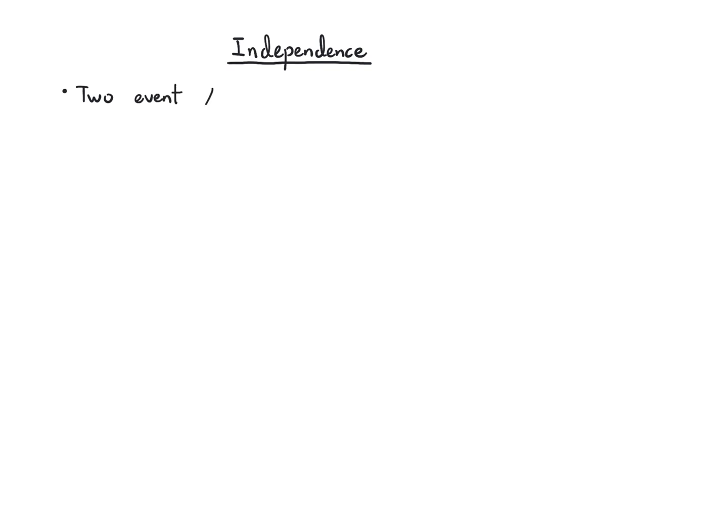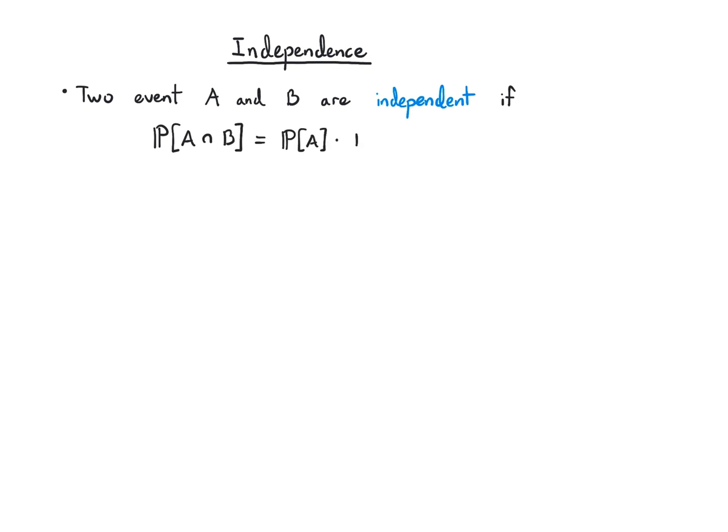Two events A and B are independent if the probability of their intersection is equal to the product of their individual probabilities. This is the definition of independence. If this definition is met, we say that the two events are independent. This has a lot of interesting implications, but the main thing to remember is that if you want to say two events are independent, you have to check this condition.